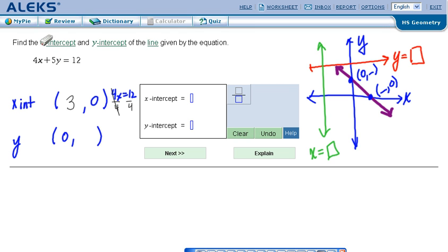Now, for the y-intercept, we're going to stick a 0 in the x-coordinate. So this just becomes big fat 0. So now we have 5y equals 12, and we divide both sides by 5.